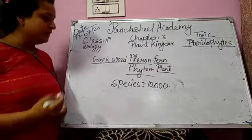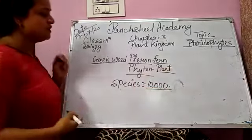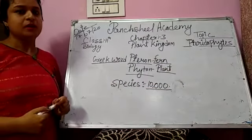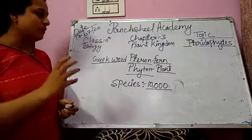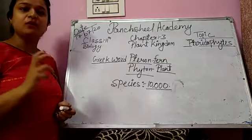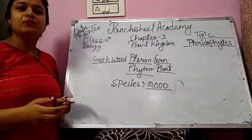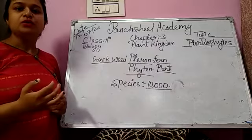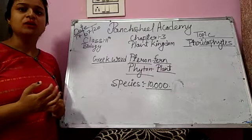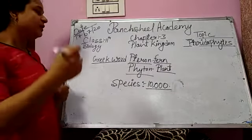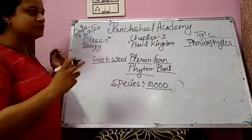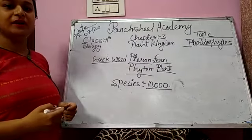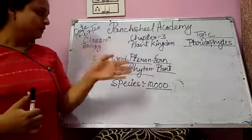All over the world, there are a total of 10,000 species of Pteridophyta present on the earth. Pteridophyta is a completely or well-developed plant; their body is divided into true stems, true leaves, and true roots. There are different varieties and species of Pteridophyta present on the earth.